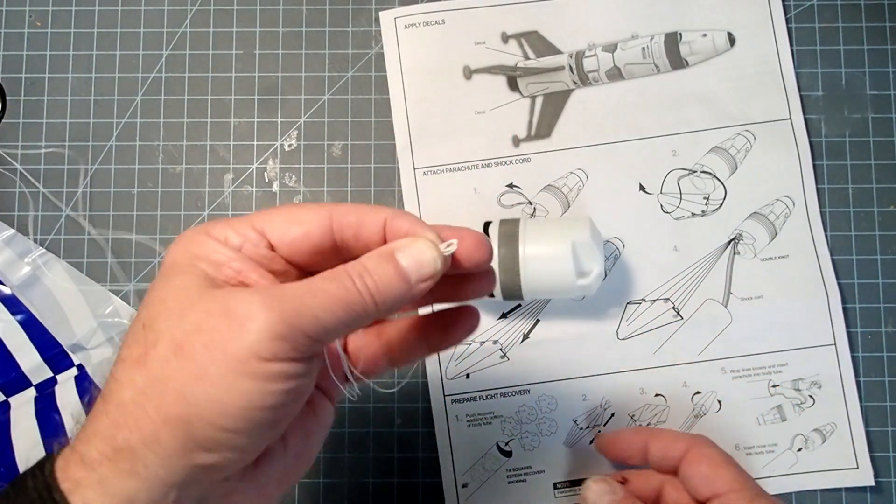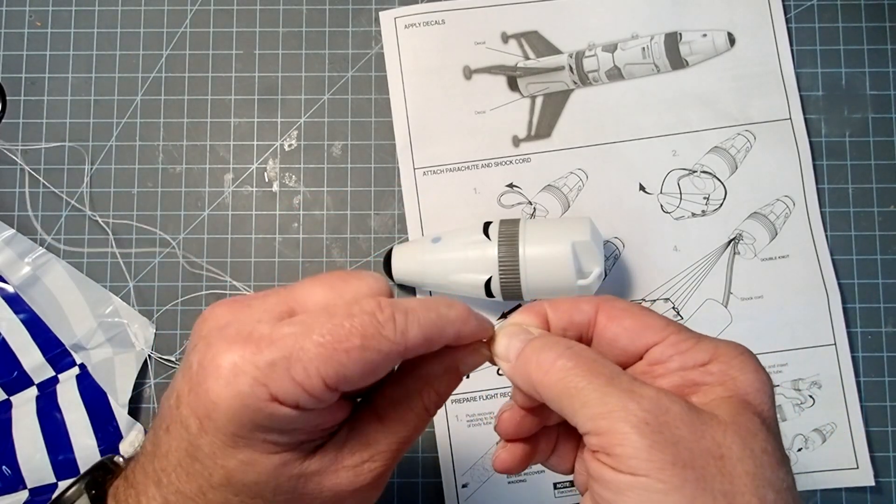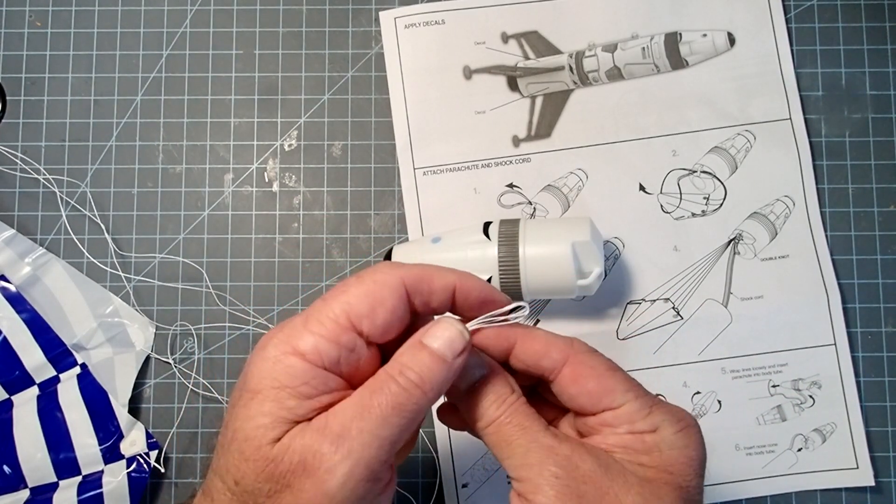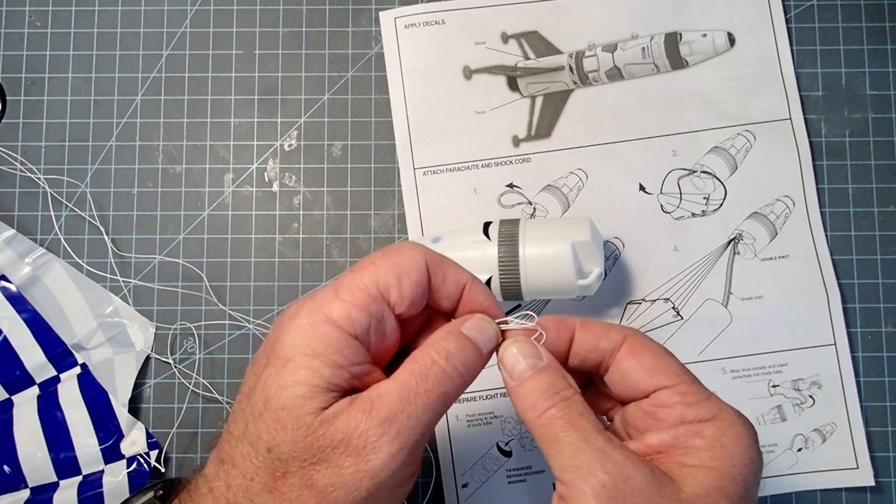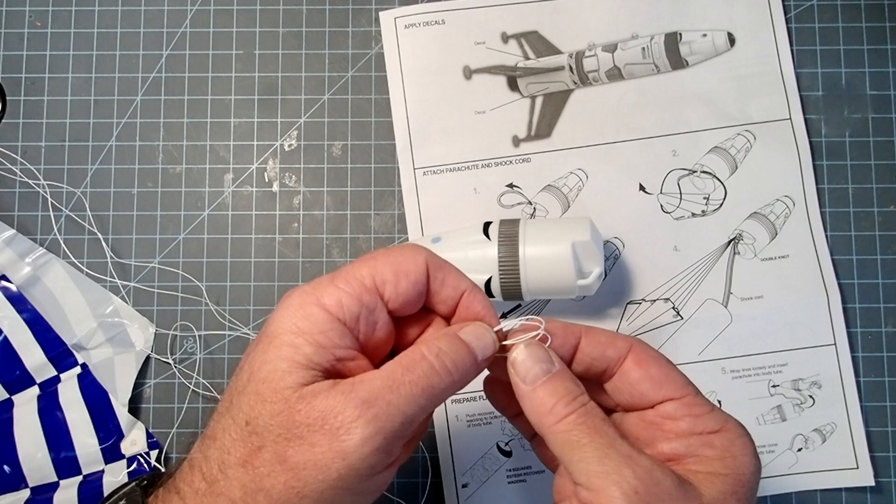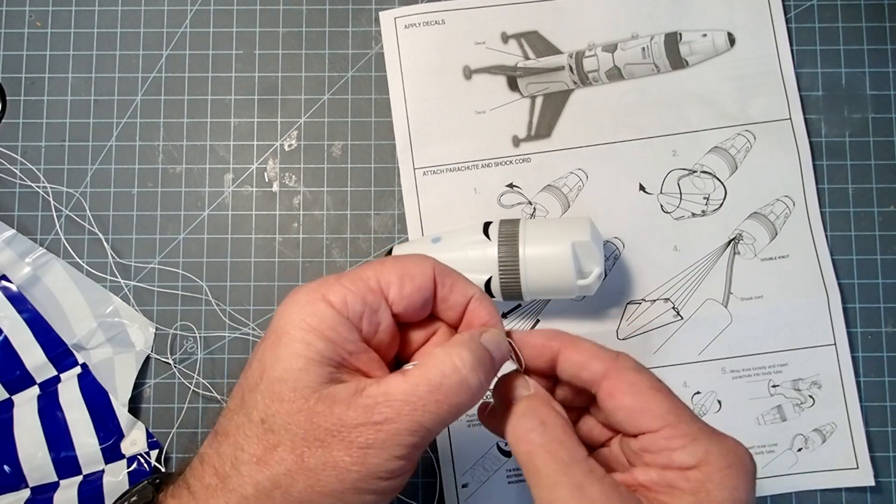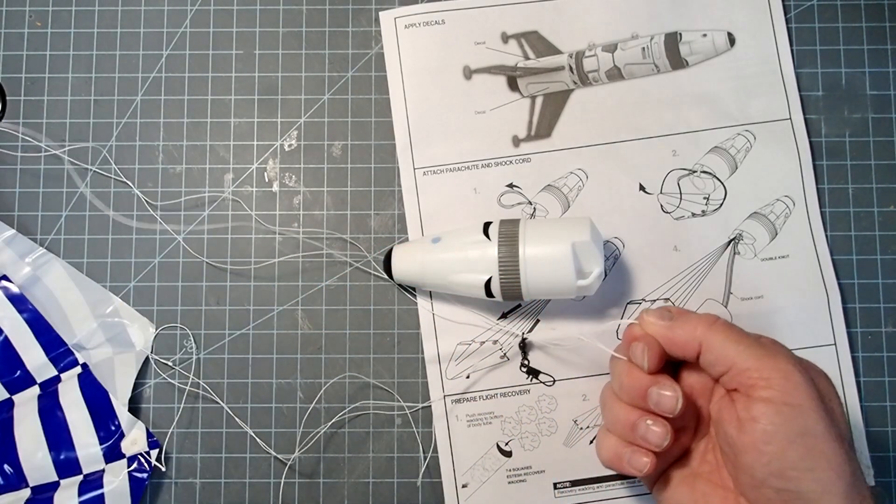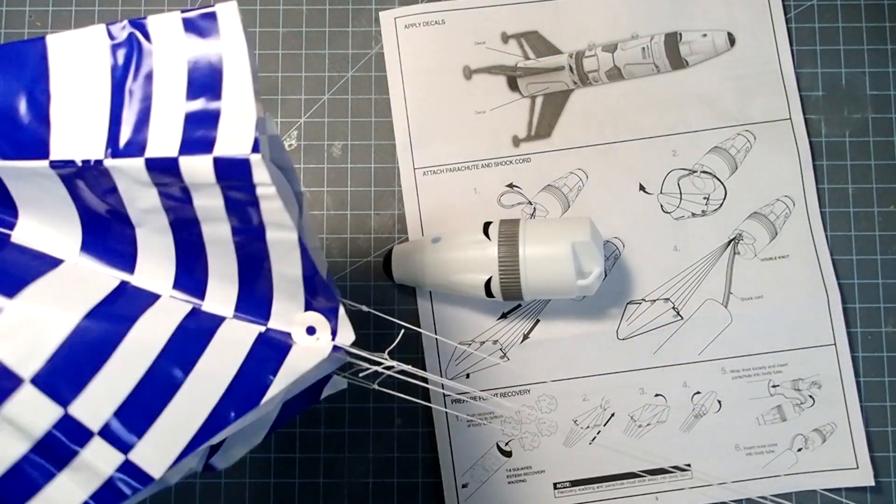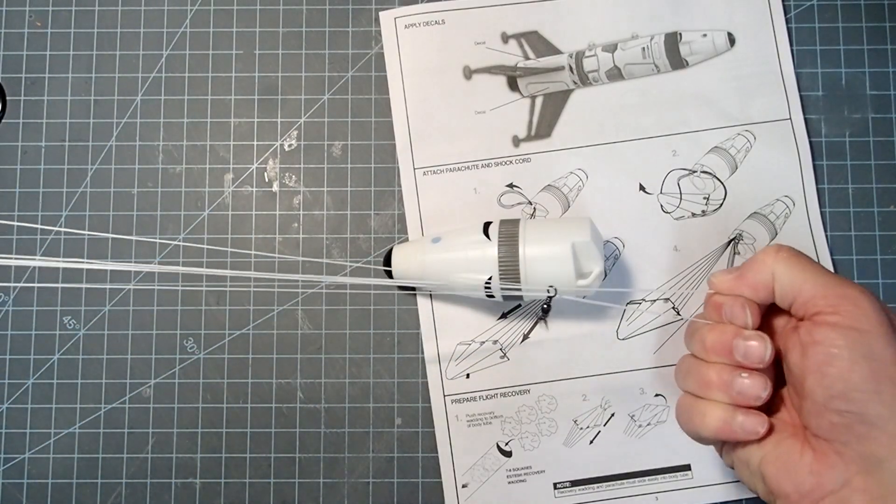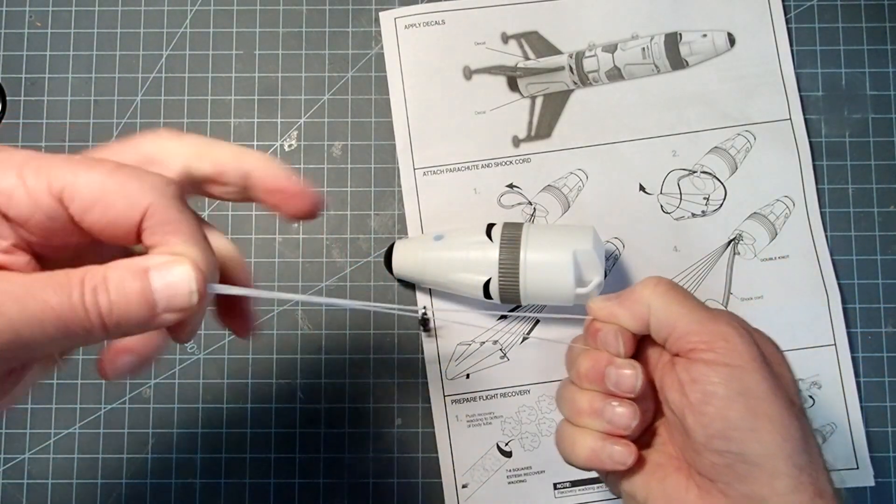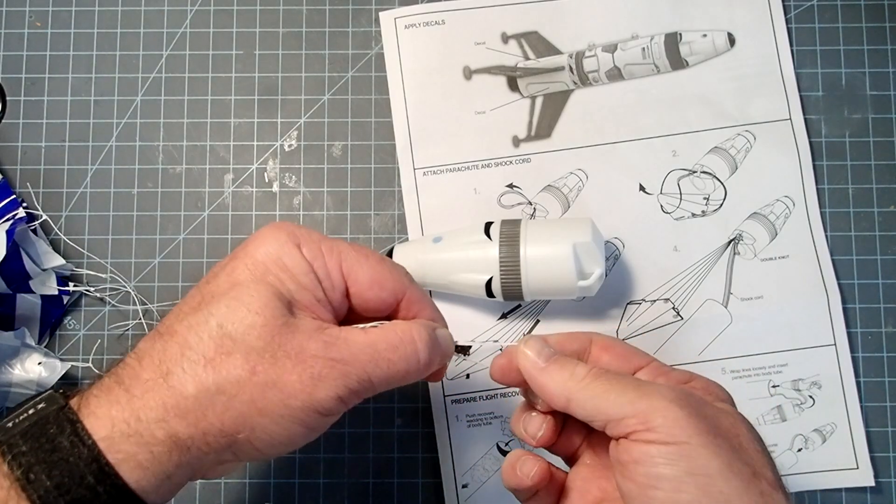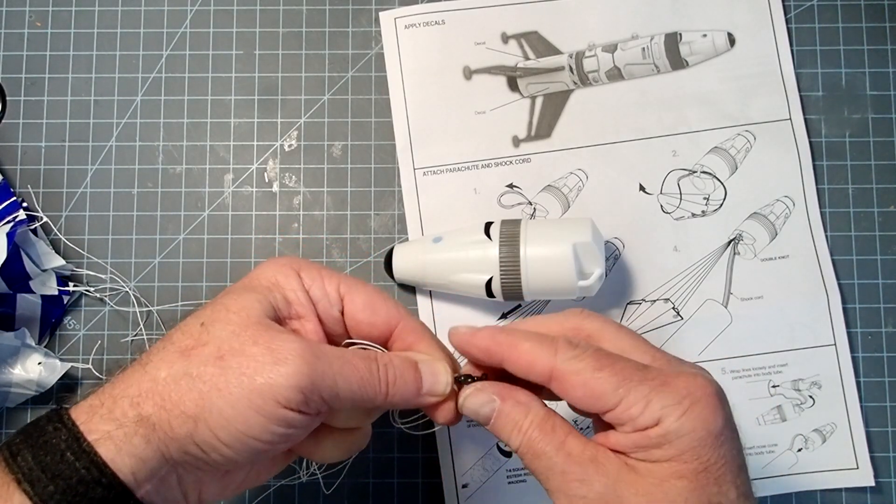So now I'm going to run my loops through the swivel side of the snap swivel, the round side there. I'm going to open up all those loops again. And at this point you can even check again. So I'm going to grab my parachute once more, make sure everything's aligned. And now I'm just going to keep tension on here so they don't change length on me. And now I'm going to pass the entire snap swivel through those loops.